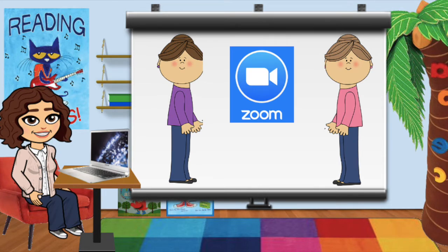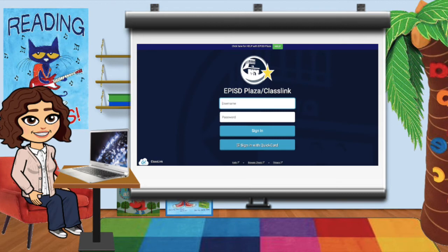Students will be logged into Zoom while they are taking their tests. I will be assigning students to breakout rooms, and there will be adults from the campus there to support students if they need assistance. Ensure that once you are in ClassLink that it looks like this, that it says EPISD Plaza ClassLink. That will let you know you're in the correct place.